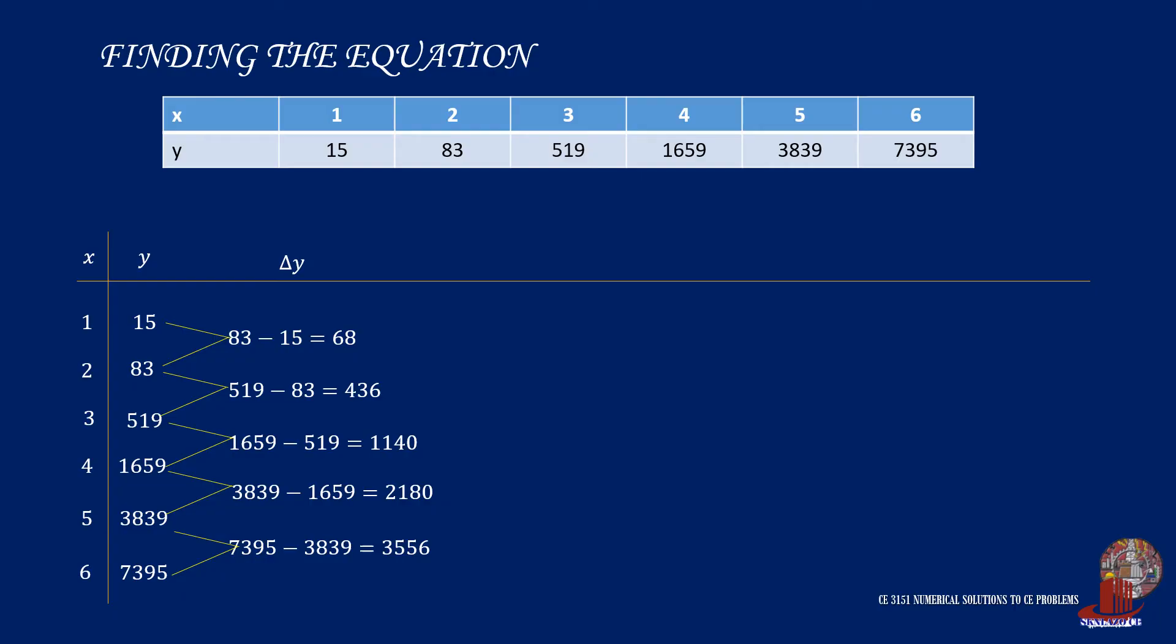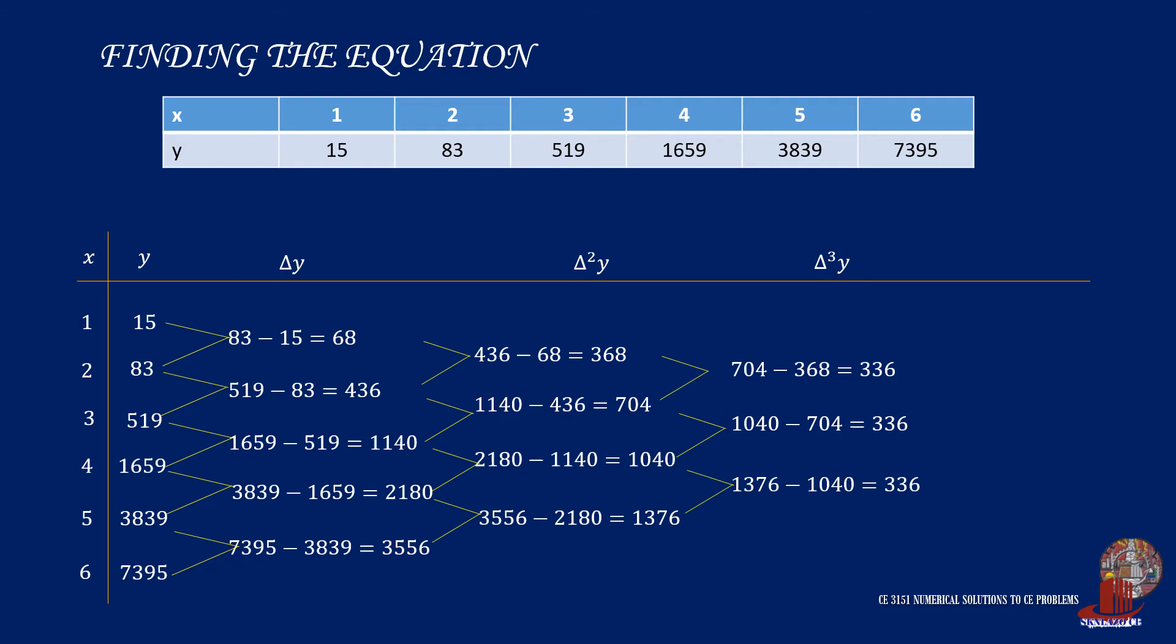Delta Y values seem to show no pattern or similarities yet, so we take delta squared Y. That would then be 436 minus 68, which is 368. 1140 minus 436 as 704. Then 2180 less 1140 equals 1040. 3,556 less 2180, and that is 1,376. Since the values still don't reflect any pattern, we proceed with delta cubed Y. So we get 704 minus 368, which is 336. 1,040 less 704, which is also 336. Then 1,376 less 1,040 as 336.